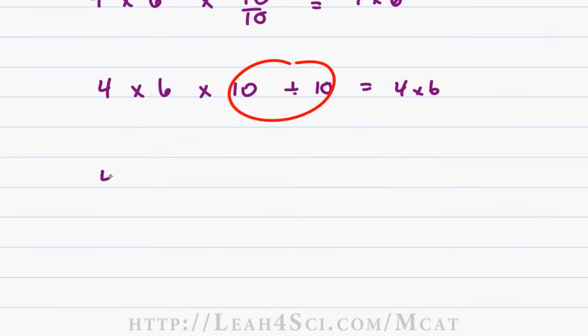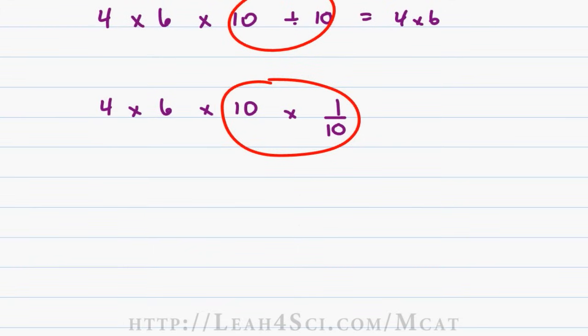I can also write it as 4 times 6 times 10 times 1 over 10. One more time, I have times 10 divided by 10. And I can even write it as 4 times 6 times 10 divided by 10. This is the key.